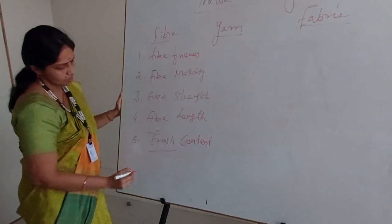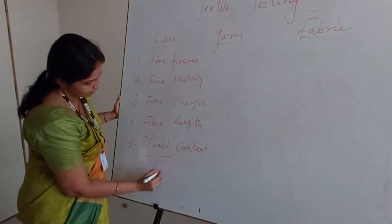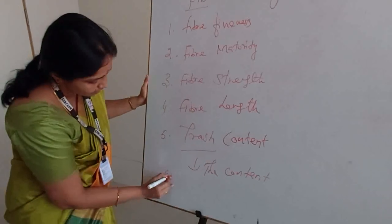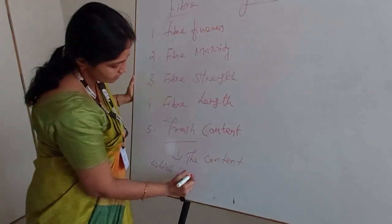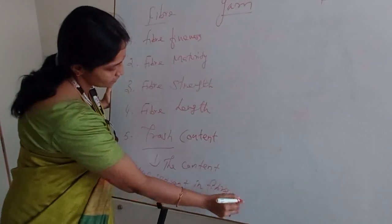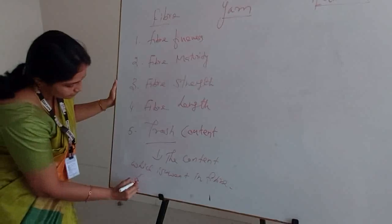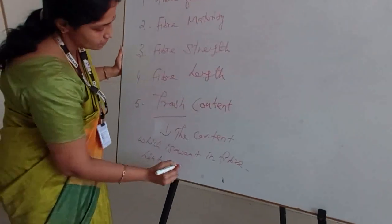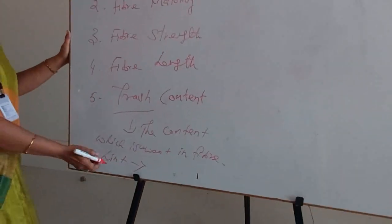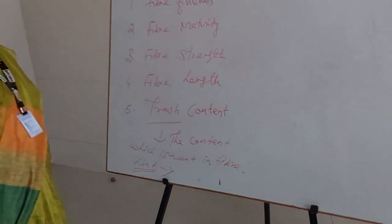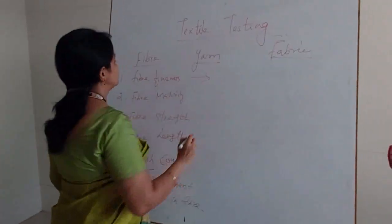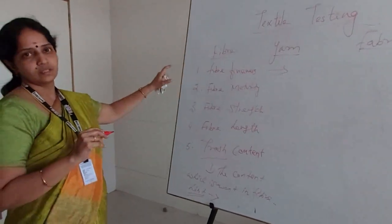Here, what is trash? The content which is unwanted, which is present in the fiber. The clean fiber is called lint. That means the trash which is removed from the fiber is called clean fiber or lint. So now we are going to see what instruments are going to be used for this particular fiber testing.